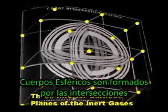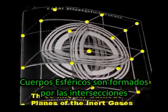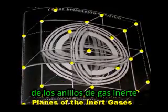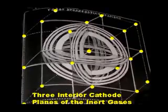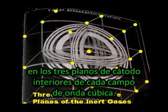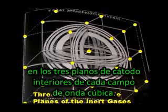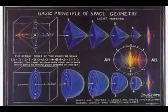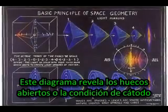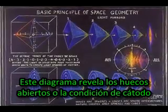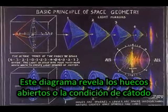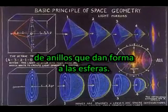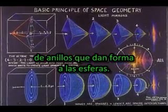Spherical bodies are formed by the intersections of the inert gas rings on the three interior cathode planes of each cubic wave field. This diagram reveals the open holes, or cathode condition of the rings, which give form to the spheres.